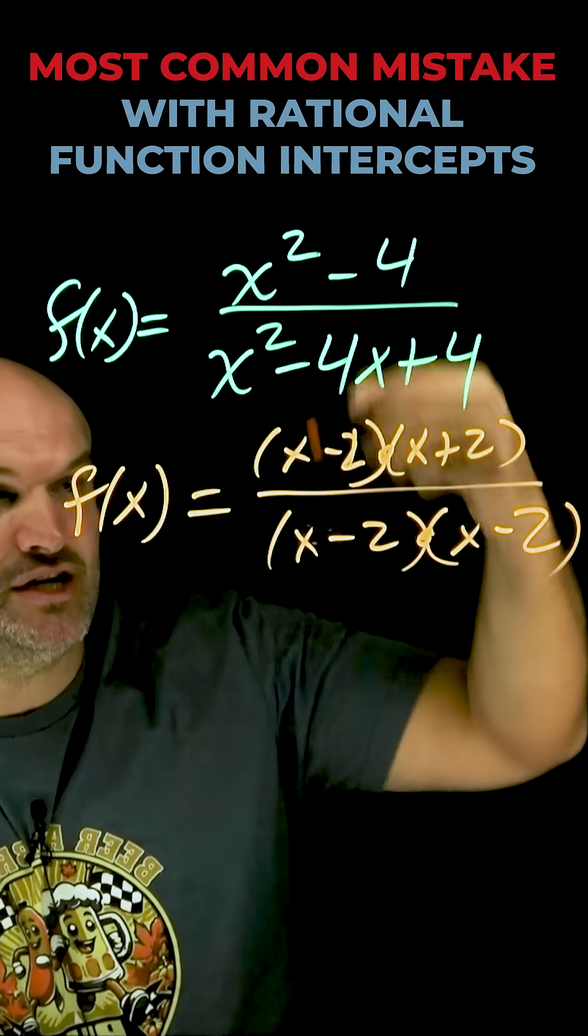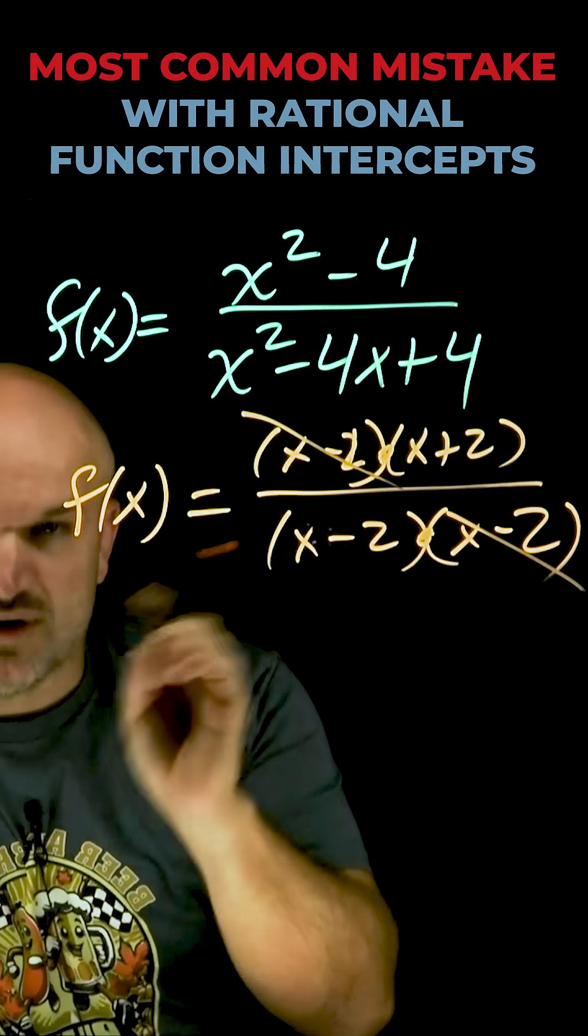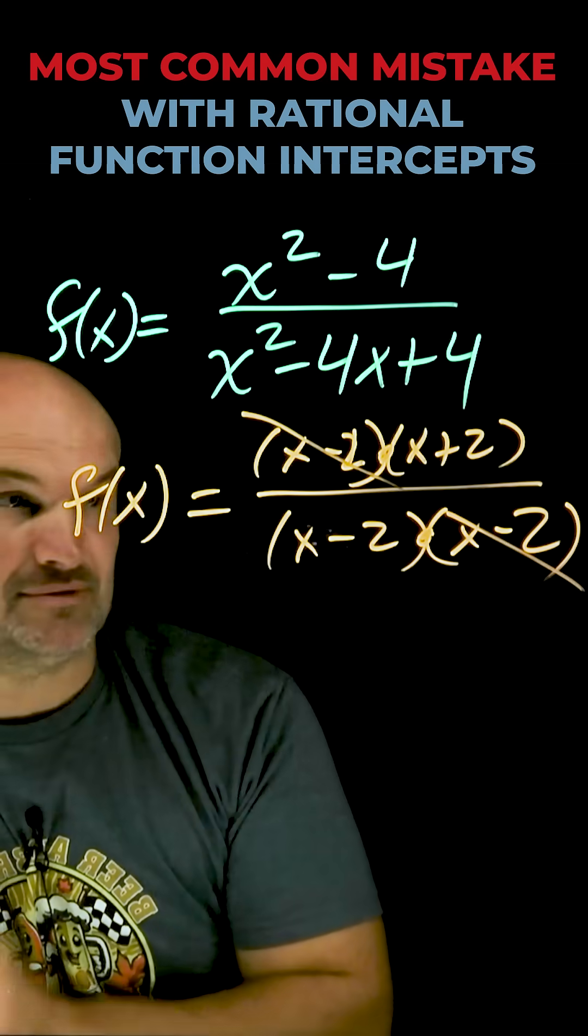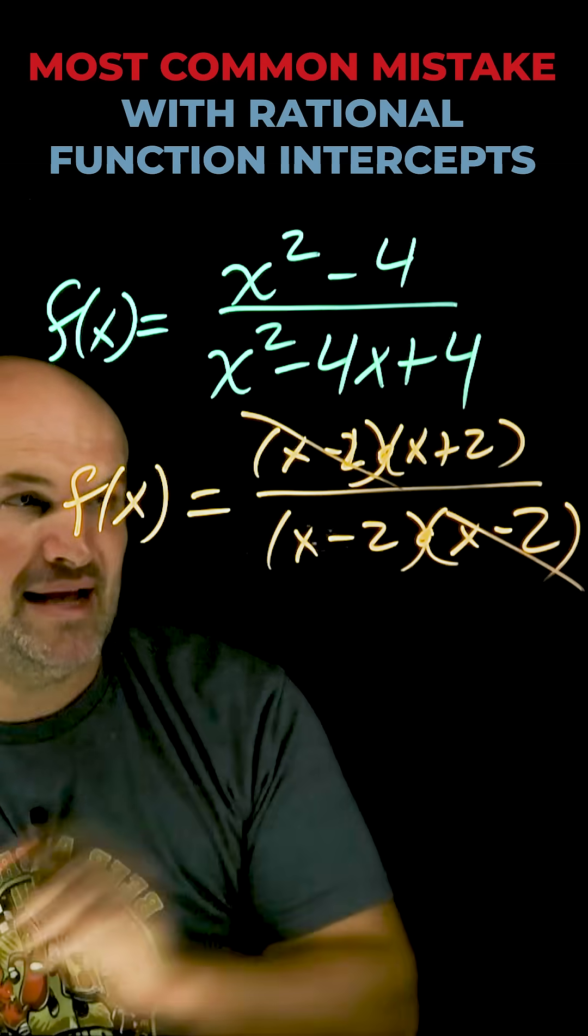Whenever you have the exact same expression in the numerator as well as in the denominator, those can now be divided out. What's important about expressions that get divided out? Those are what we call our removable discontinuities. They are not defined in our domain.